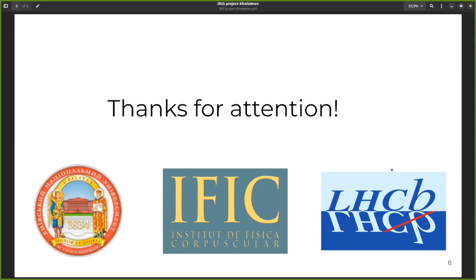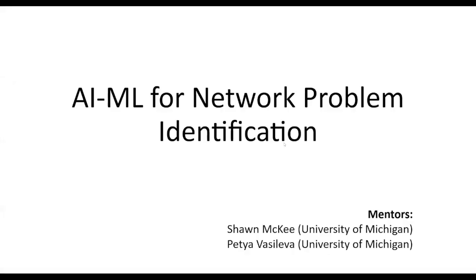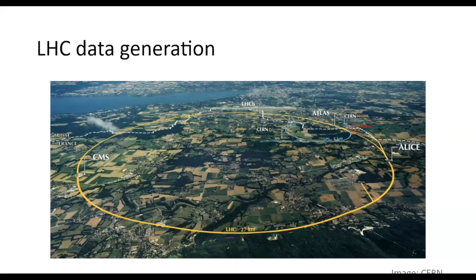Hello, my name is Maxim. I'm a bachelor student at Kyiv. And I would like to tell you about my project of implementing machine learning algorithms for network problem identification. My mentors are Petya Vasileva and Sean McKee from the University of Michigan. So, what kind of network are we talking about? First of all, I'd like to tell you, here you can see the Large Hadron Collider located at CERN. There are lots of experiments there, such as CMS, Atlas, Alice and others. They generate lots of data, which we can then analyze and do our research. But, of course, we want to be able not only access it from CERN, but from other parts of the world, from our home institutions. So, for that reason, the global infrastructure for HEP data analysis was created.